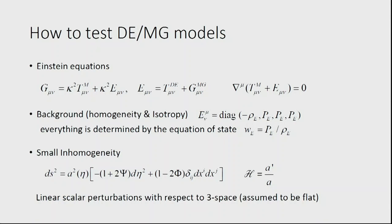In the background, due to homogeneity and isotropy, I can write E_μν as a diagonal metric with energy density and pressure. If you consider dark energy, this is the energy density and pressure of dark energy. The only thing you need to know is the equation of state — the ratio between pressure and density. This may come from modified gravity, but you can still define an effective tensor and an equation of state.